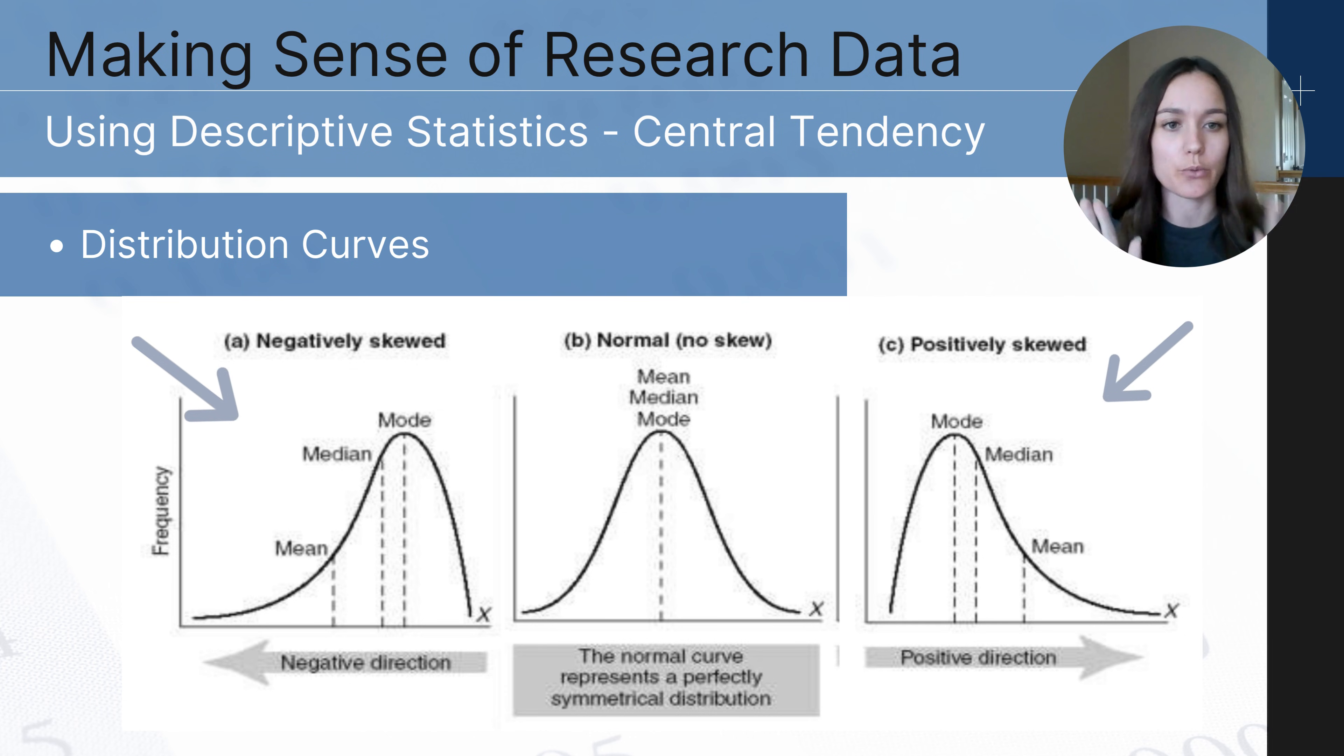Now you can see on the left and the right we have two skewed distributions. This is where outliers have pulled the mean away from the majority of scorers. And so you can see on the distribution on the left, this is a situation where we have a couple of low scoring outliers here.